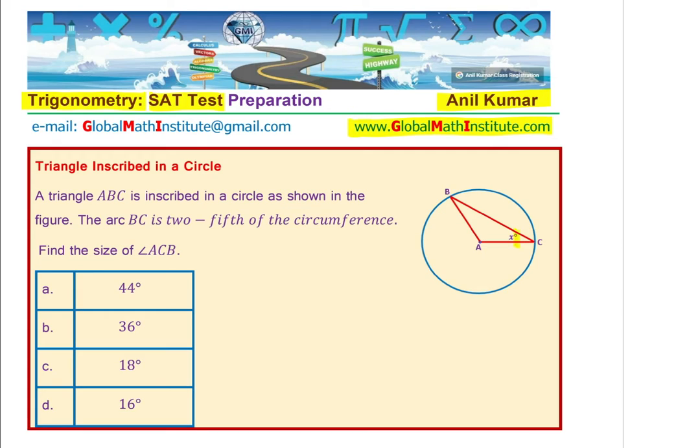So we have to find this angle of the triangle and we are given that the circumference two-fifths is the arc shown. The arc shown to you is there, B to C. So the minor arc BC is two-fifths of the circumference.